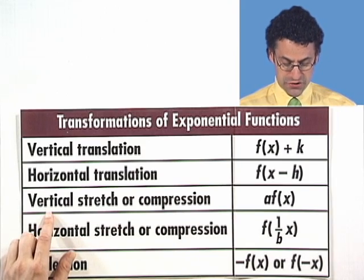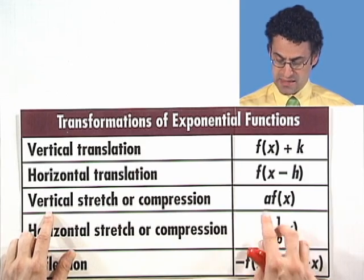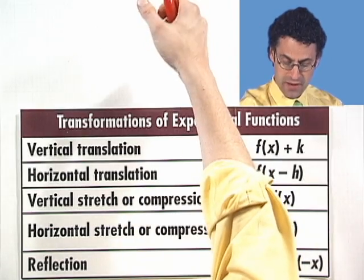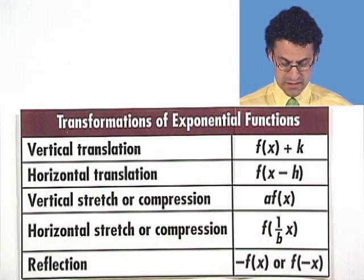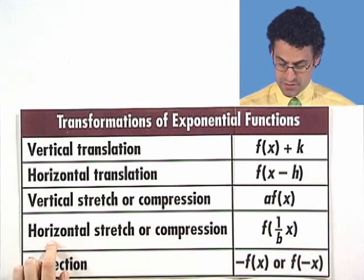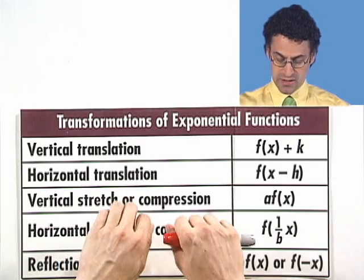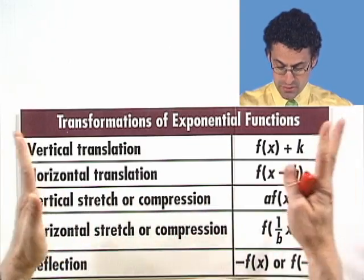Then there's the vertical stretch or compression, where we take the picture and stretch out the y values or compress the y values. Or a horizontal stretch or compression, which is a similar thing, where we take the x values and either stretch them out or compress them back.